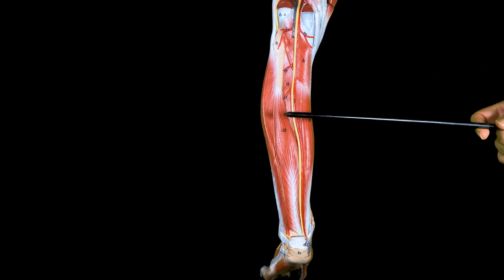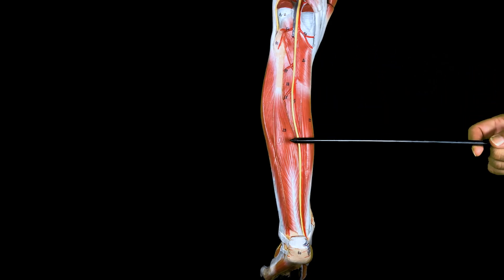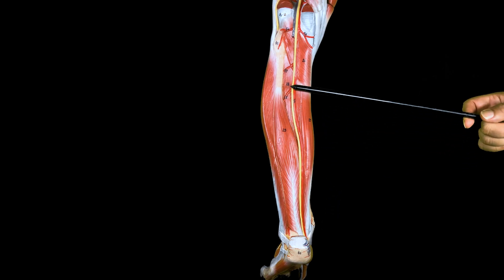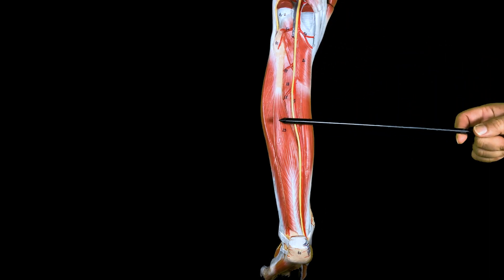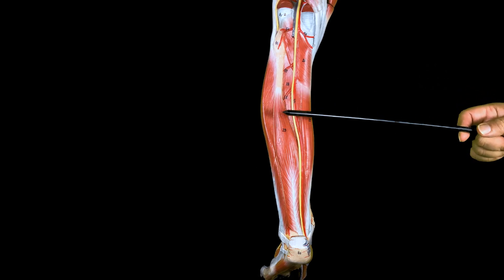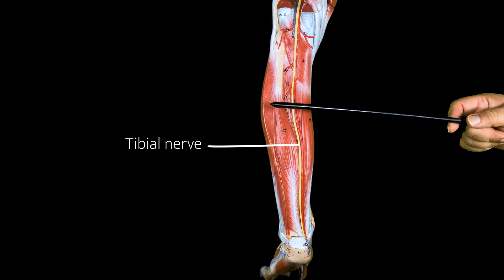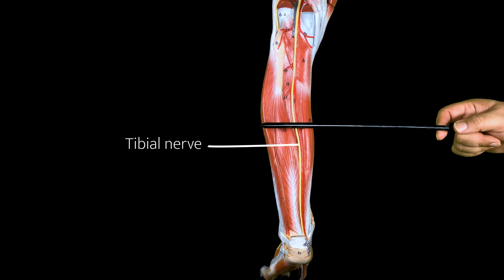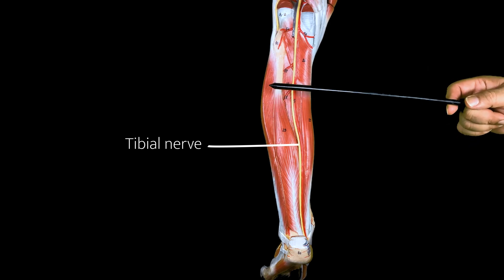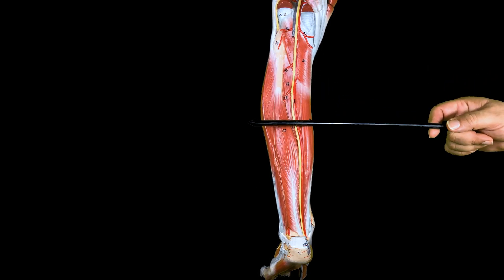All the muscles located in the posterior leg primarily help in producing plantar flexion at the ankle joint and inversion at the subtalar joint complex. These muscles are controlled by the tibial nerve, which is one of the main branches arising from the sciatic nerve.